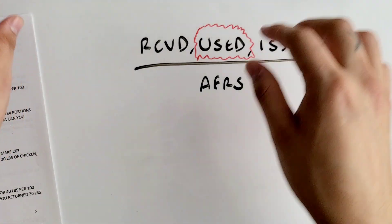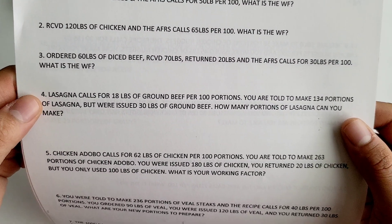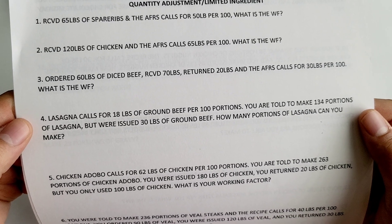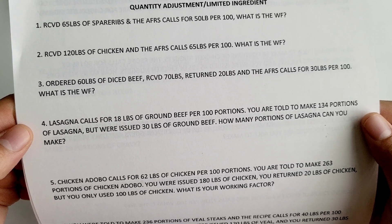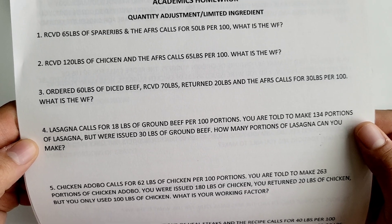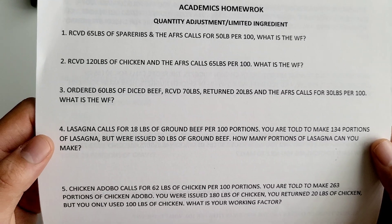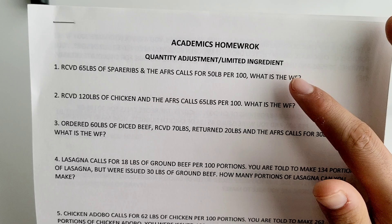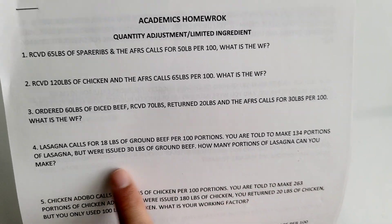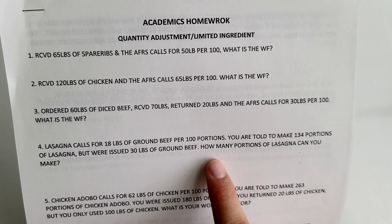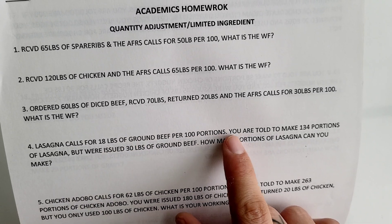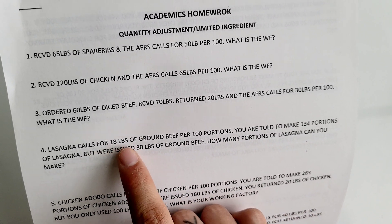Moving on to number four: lasagna calls for 18 pounds of ground beef per 100 portions. You are told to make 134 portions of lasagna, but you were issued 30 pounds of ground beef — how many portions of lasagna can you make? Make sure you fully read the question, because this one asks how many portions you can make with the amount of ground beef issued, not just the working factor. The AFRS — 18 pounds per 100 portions — is what your recipe card calls for.